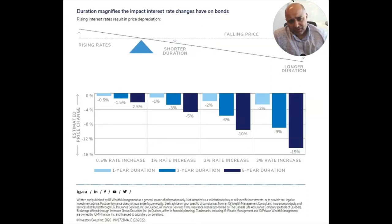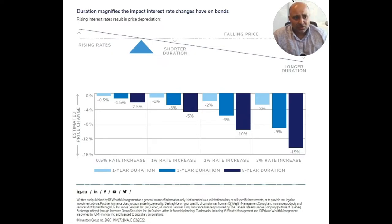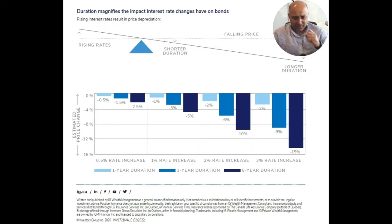Impact of Rising Interest Rate on Bonds. Duration is a measure used to assess the impact that changes in interest rate will have on a bond. Short-term bonds are generally less price-sensitive than long-term bonds. If a bond fund has a duration of 5 years and interest rates increase 1%, the bond unit price may decrease by approximately 5%.